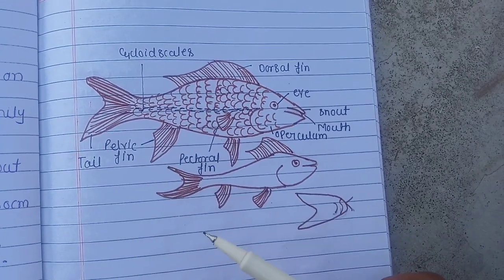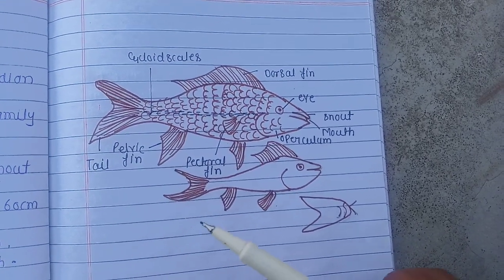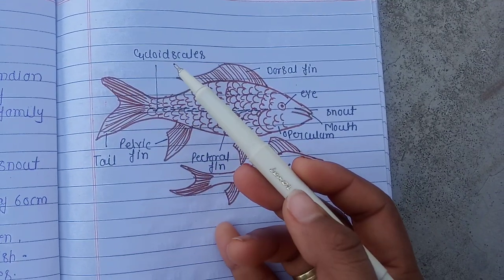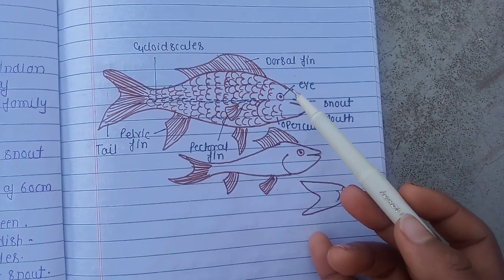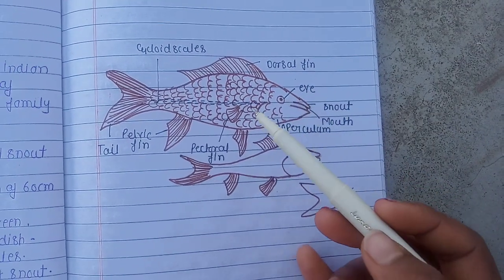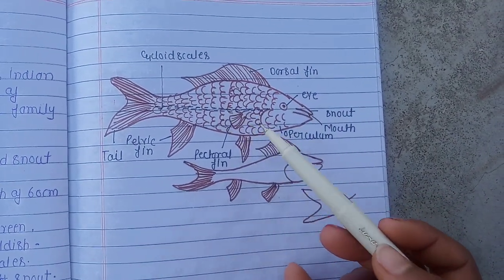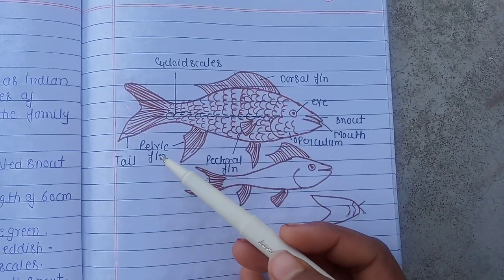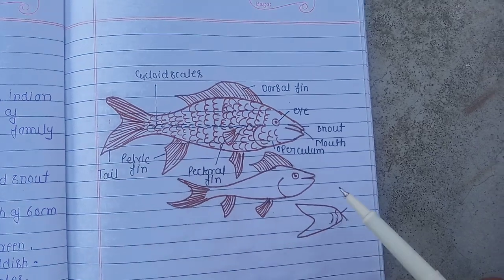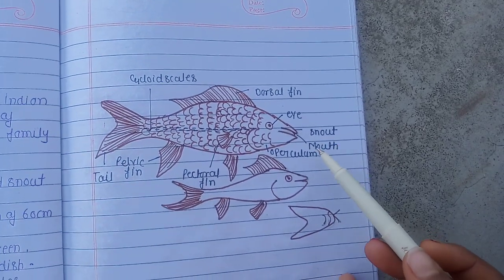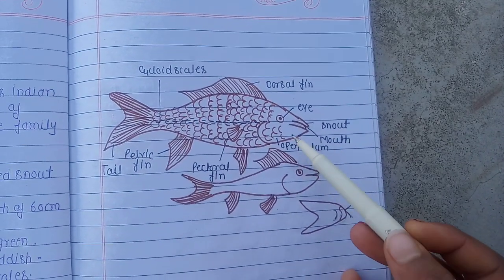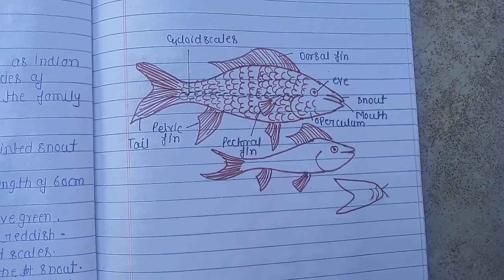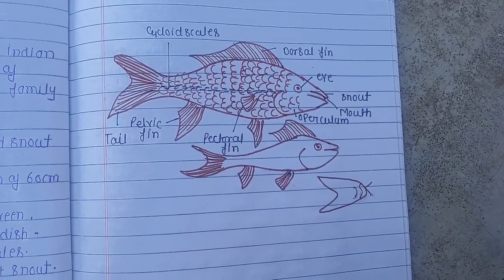Here is a picture of Cirrhinus reba showing the cycloid scales, dorsal fin, eye, lateral line, pelvic fin, tail, snout, and mouth. Thank you so much.